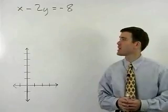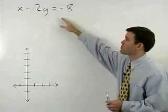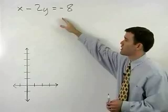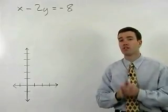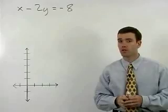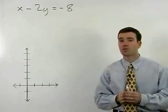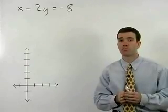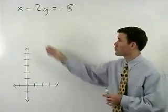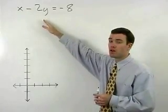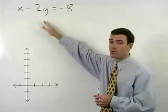To graph the line that has the equation x minus 2y equals negative 8, we would first convert the equation to slope intercept or y equals mx plus b form. In other words, we want to get y by itself on the left side of the equation before we graph.